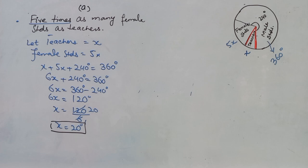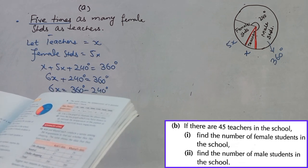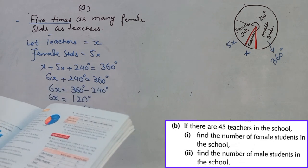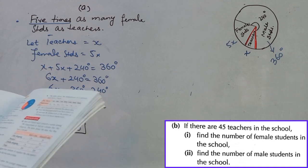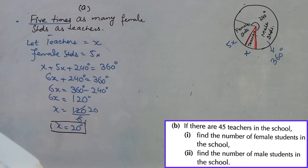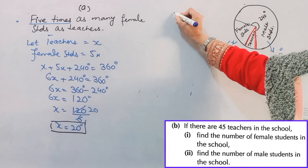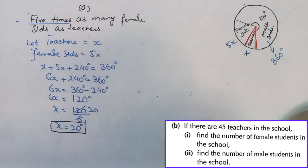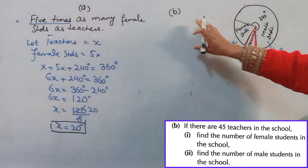Now we will attempt part b: if there are 45 teachers in the school, find the number of female students in the school. This is very easy — female students are five times the teachers, and teachers are 45.